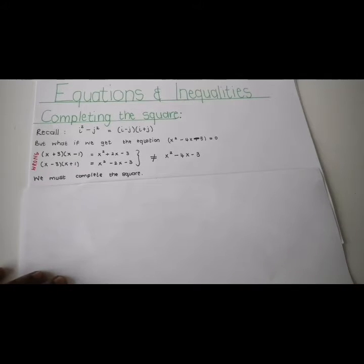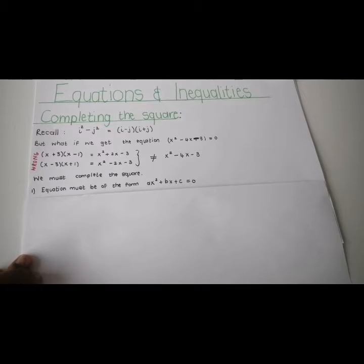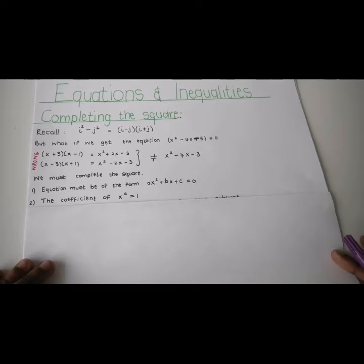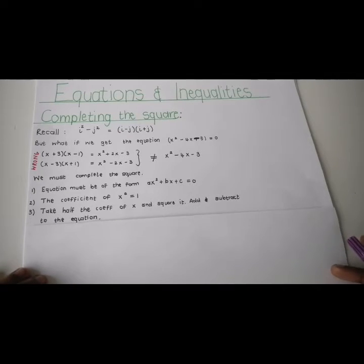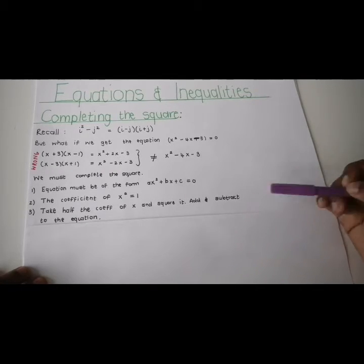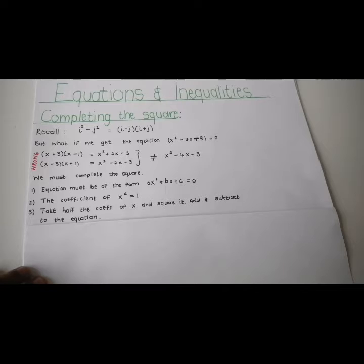In this case you have to complete the square. In order to complete the square we need the equation to be in the form ax squared plus bx plus c equals 0. We need the coefficient of x squared to be 1, and we need to take half of the coefficient of x, square it, and then add and subtract it to the equation — basically adding 0, because you add the same thing that you subtract.